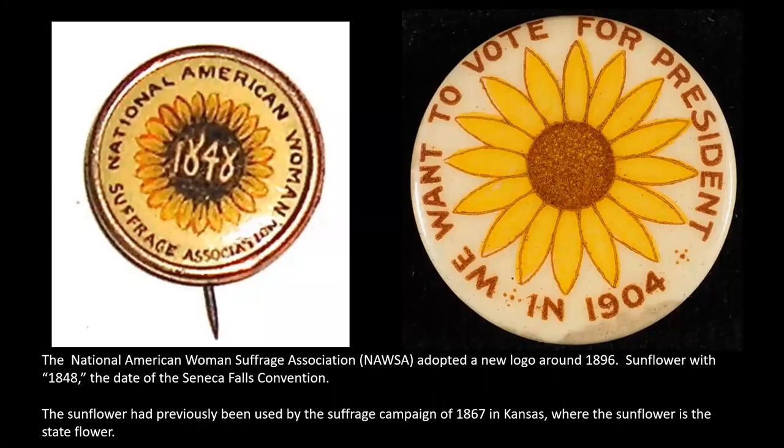The National American Women's Suffrage Association adopted a new logo with the sunflower around 1896. You can see an example on the left — the recognizable sunflower with the dark center and bright yellow petals, and the year 1848 in the center, commemorating the date of the Seneca Falls Convention. The button on the right is from 1904, with another sunflower and the phrase 'We want to vote for president in 1904.' You see how this sunflower endures in the history of women's suffrage.